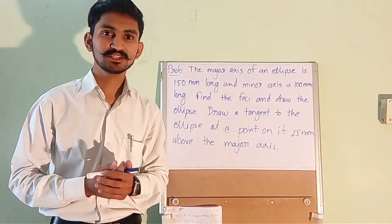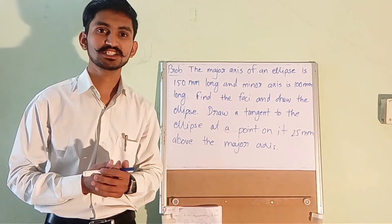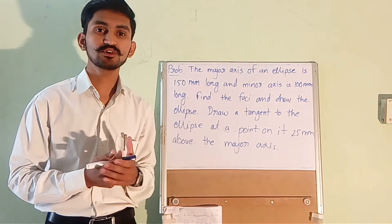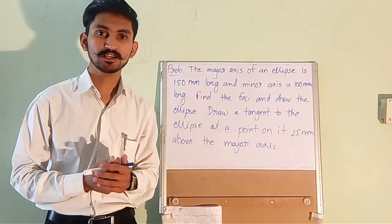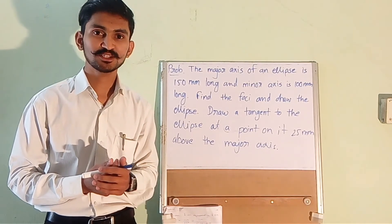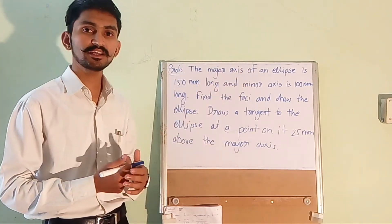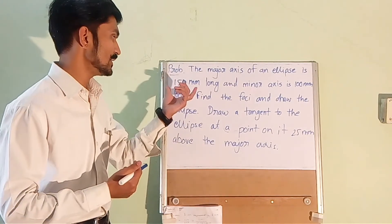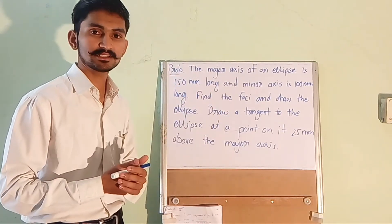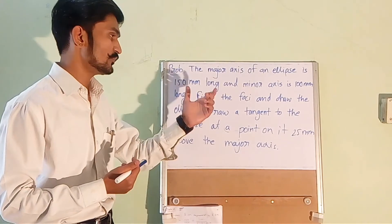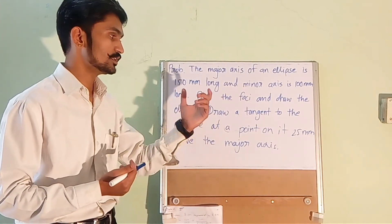Hello everyone, I am Kaur Rajkumarsing. Welcome to FlyRash Push Towards Infinity. In this video we are going to learn how to draw an ellipse using the arc of circle method. The question is: the major axis of an ellipse is 150 mm long and the minor axis is 100 mm long. Find the foci and draw the ellipse.